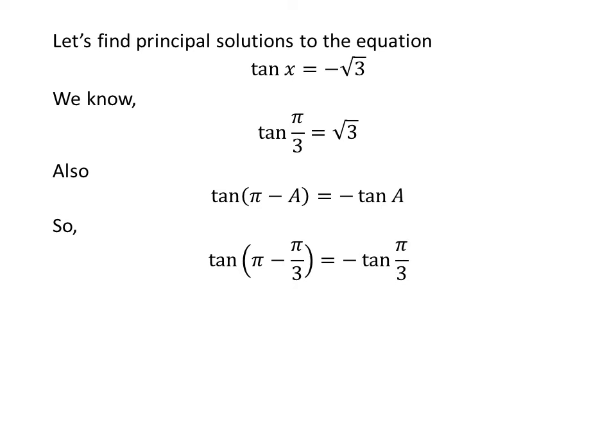Applying the above identity, tangent of pi minus pi upon 3 is equal to minus tangent of pi upon 3. Since pi minus pi upon 3 equals 2 times pi upon 3, and plugging in the value of tangent of pi upon 3 gives us tangent of 2 times pi upon 3 is equal to minus square root of 3.